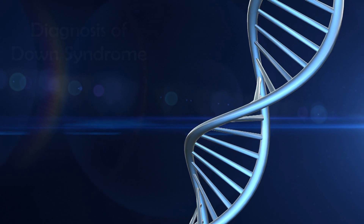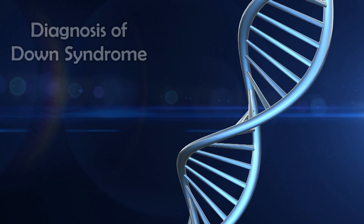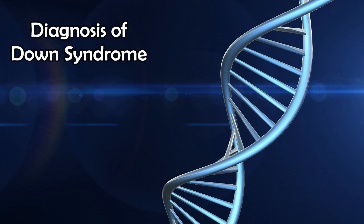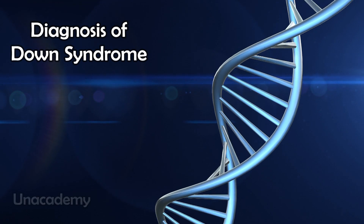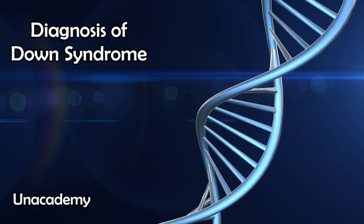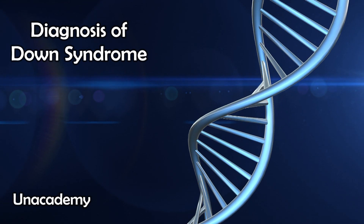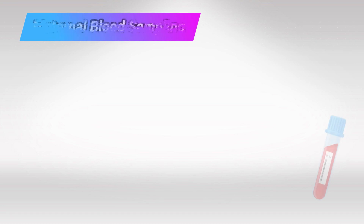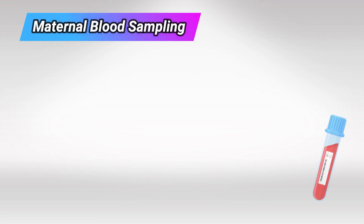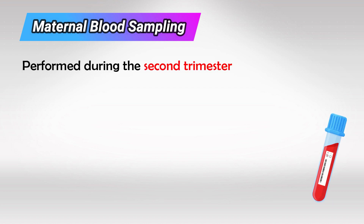Welcome back. In this video we'll talk about the diagnosis methods of Down syndrome. Most of the diagnosis methods are done prenatally, or before the baby is even born. We can do a variety of tests to estimate the chance of the fetus having Down syndrome, and sometimes we can have a definitive diagnosis.